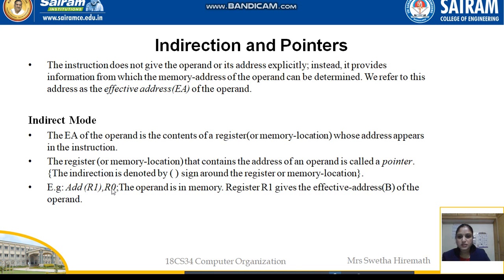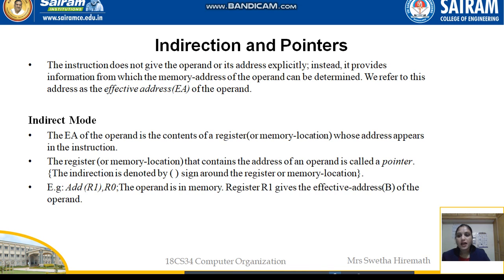For example, ADD (R1), R0 — here the operand is in memory. Register R1 contains the address of the data stored there, giving the effective address of the operand. So R1 indirectly points to the value, and we add the value at that address to R0, storing the result in R0.